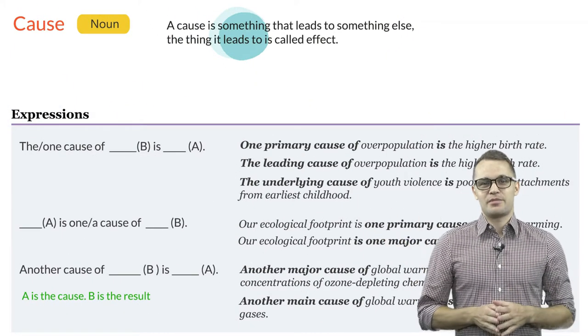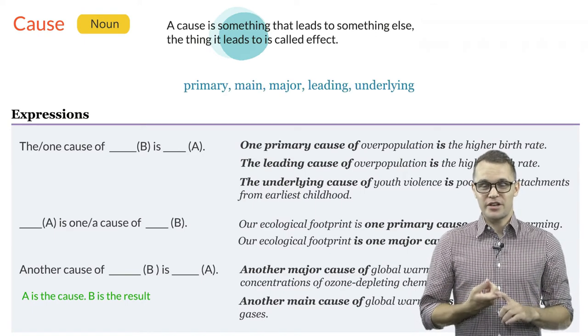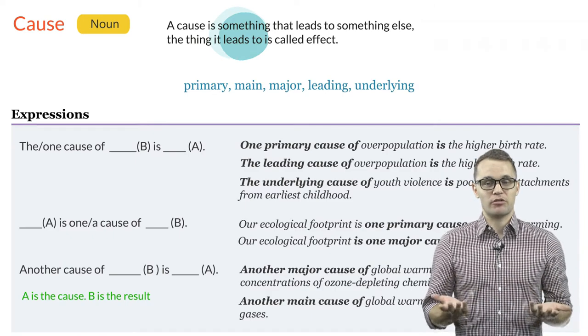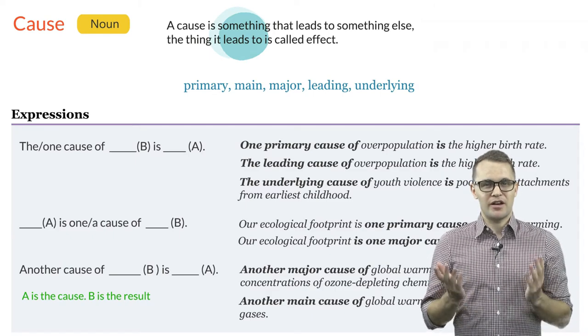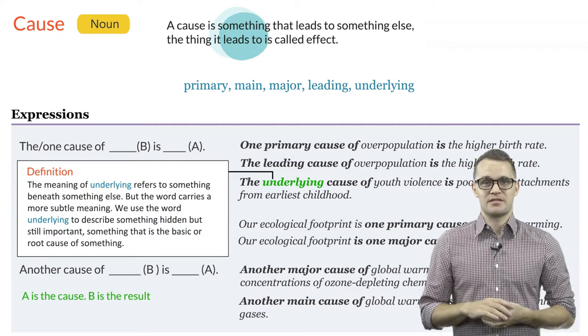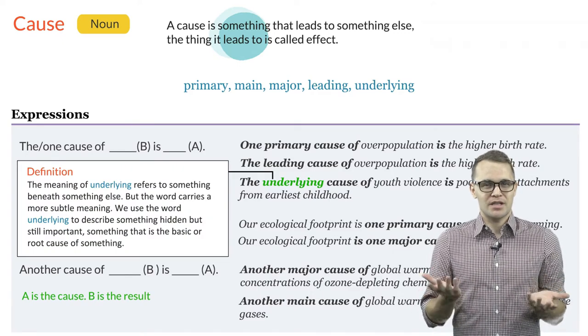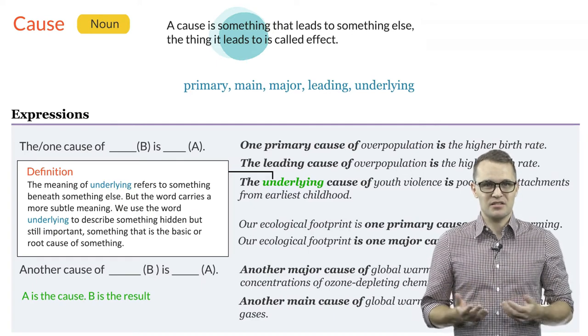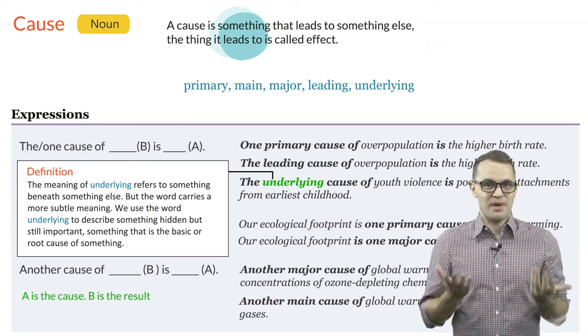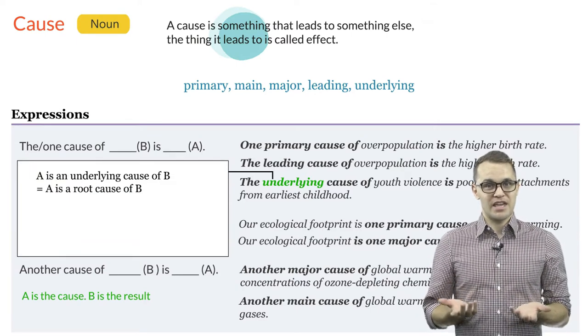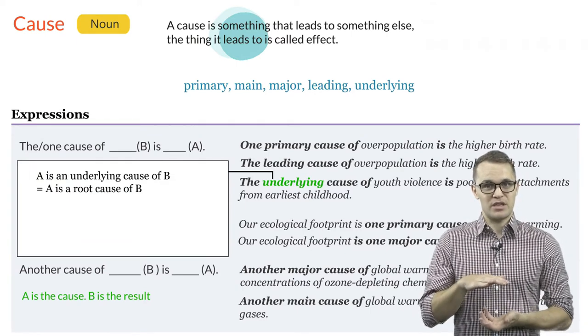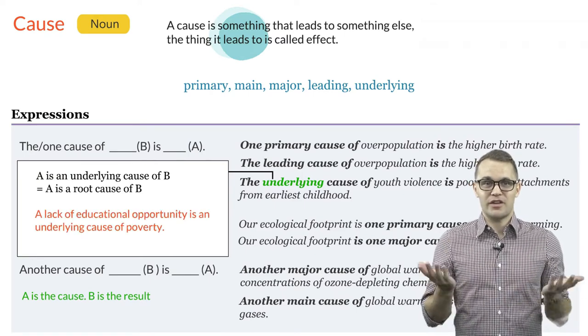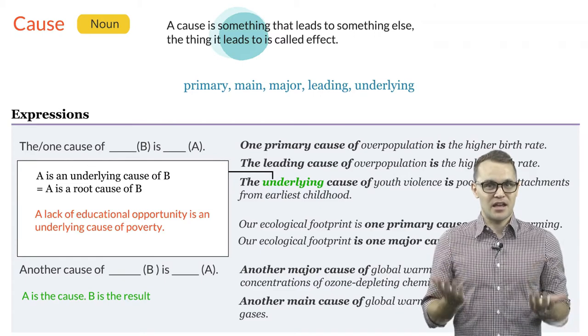As you can see from the examples, adjectives such as primary, main, major, leading or underlying are often used with the noun cause. The meaning of underlying here refers to something beneath something else. But the word carries a more subtle meaning. We use the word underlying to describe something which is hidden but still important, something that is the basis or root of something. Therefore when we say A is an underlying cause of B, it means that A is the root cause of B. For example, a lack of educational opportunities is an underlying cause of poverty.